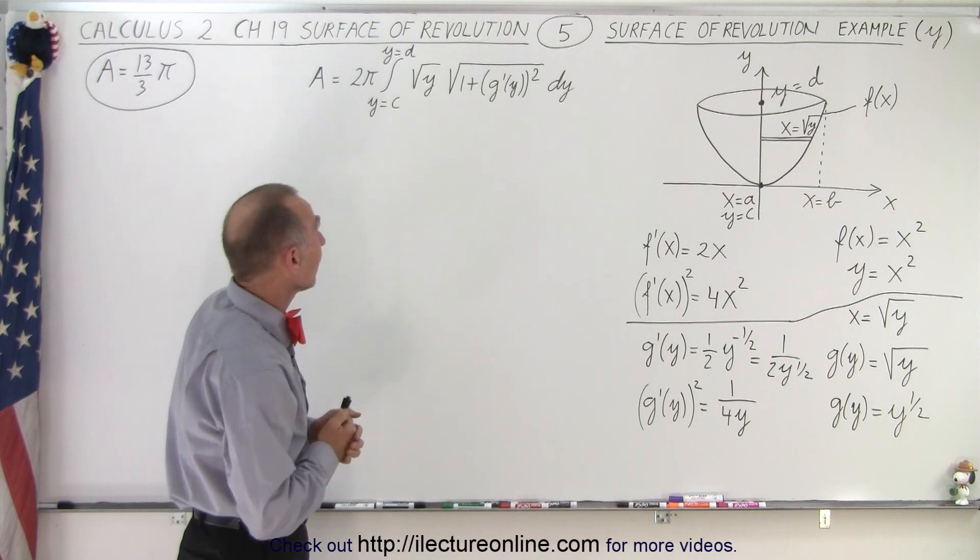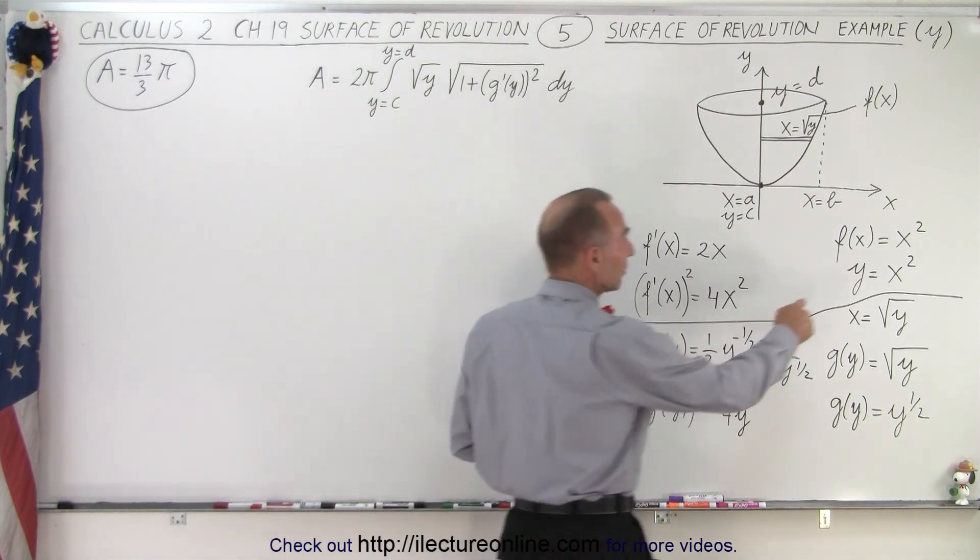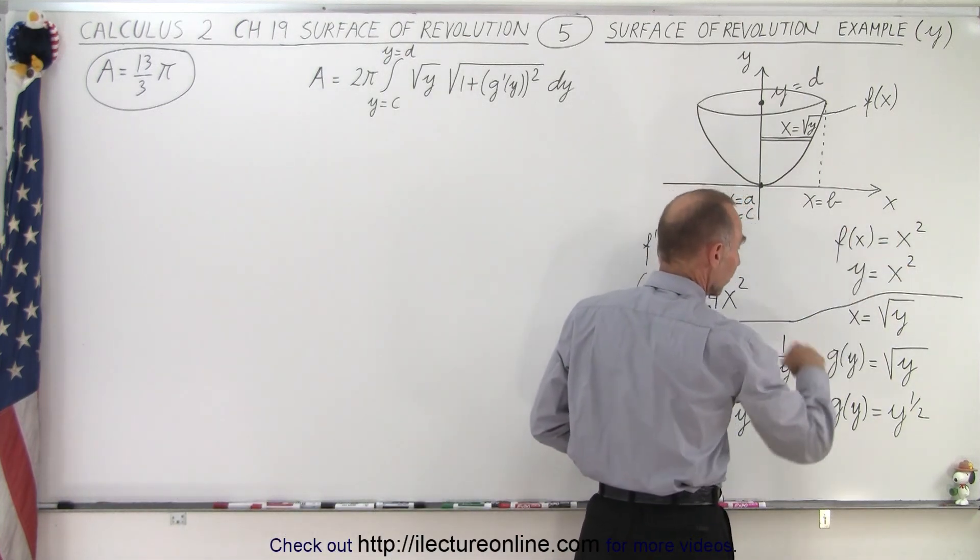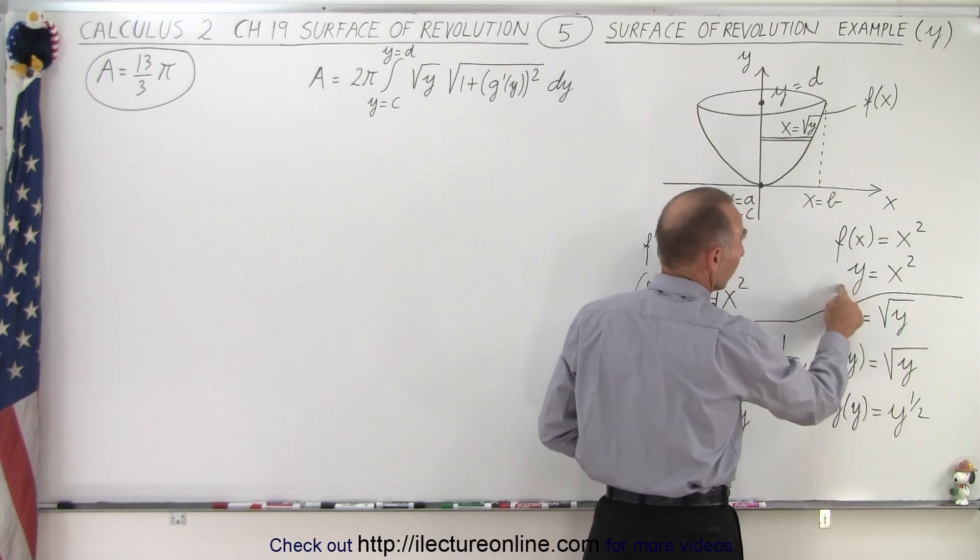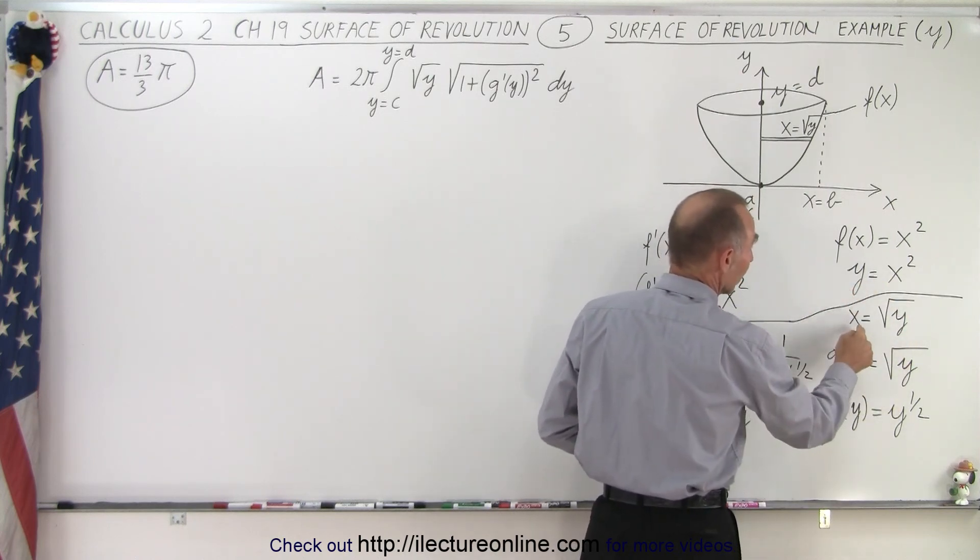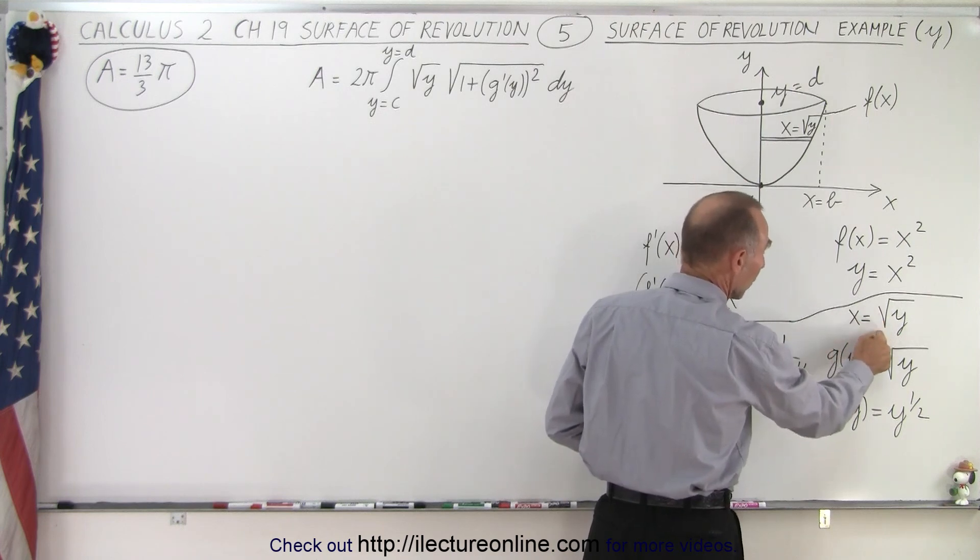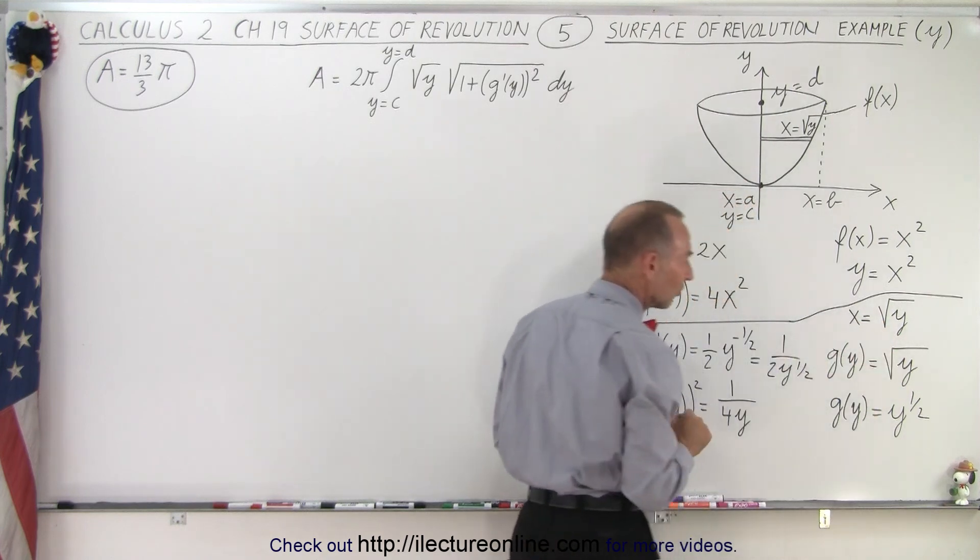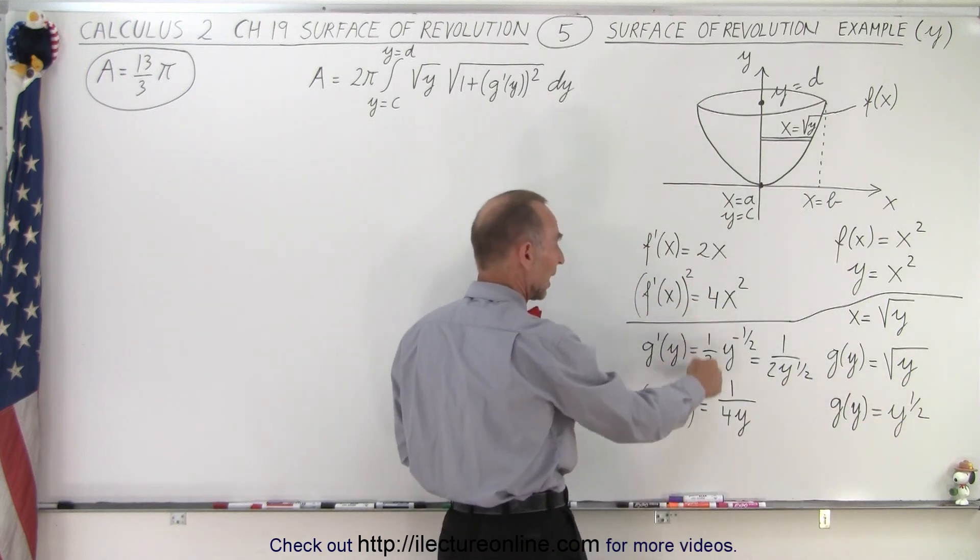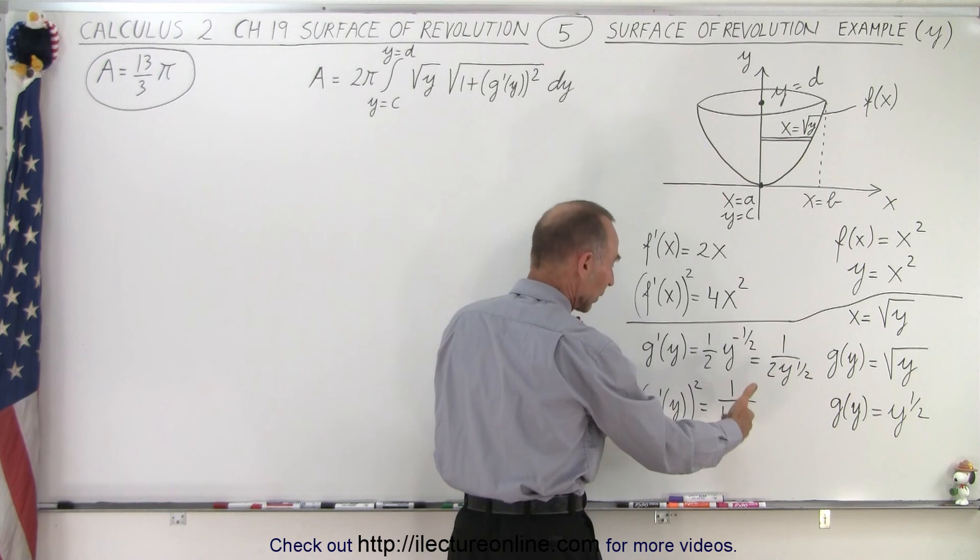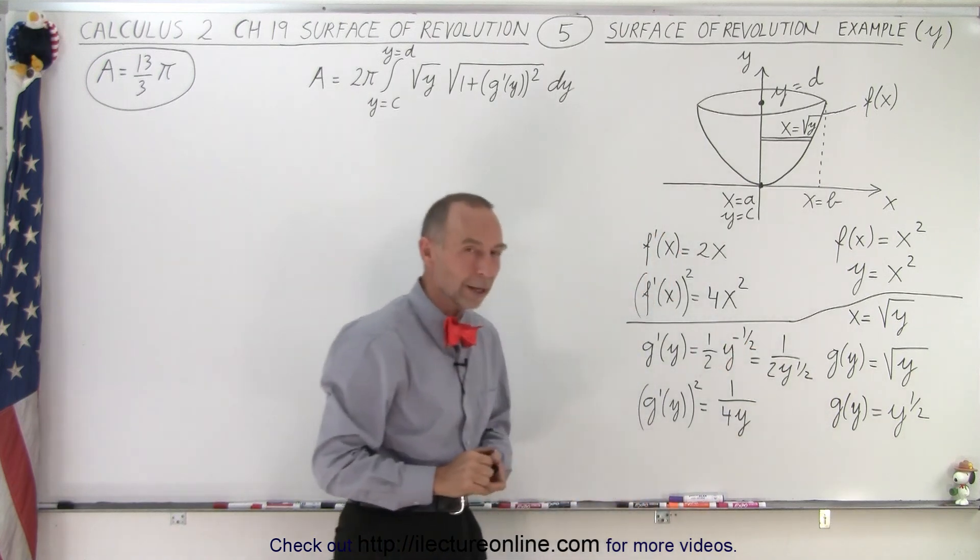What we're going to do here is take the function f of x equals x squared and turn it into the function g of y equals the square root of y, by simply saying that since y equals x squared, therefore x must equal the square root of y. So we're going to use this function instead, and the derivative of that function is 1 half y to the minus 1 half. When we square that we get 1 over 4y.